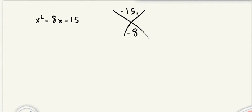So we're looking for two numbers that multiply together to give us negative 15, that add together to give us negative 8. So if we can't think of any off the bat, the first thing that you should do is create a little factor tree.